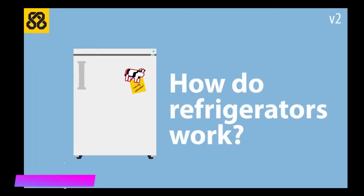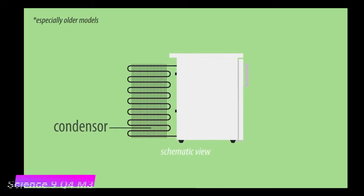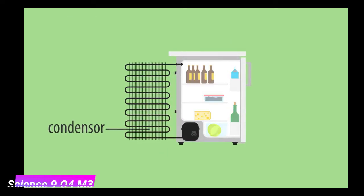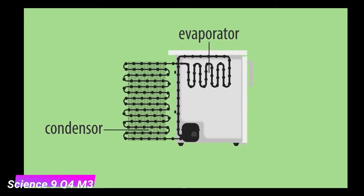How do refrigerators work? You may recognize this from the back of a fridge. It's called the condenser. Inside the fridge, connected to the condenser, is the evaporator.